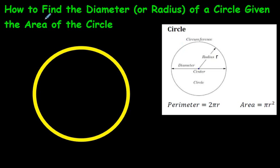Hi there. This is just a quick video on how to find the diameter or the radius of a circle, but your question has given you the area. So you know the area of the circle and you're supposed to work backwards and find the diameter or the radius of the circle.